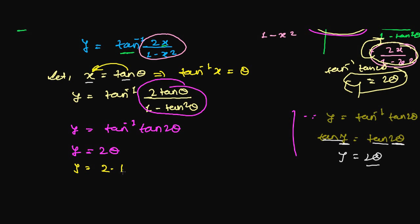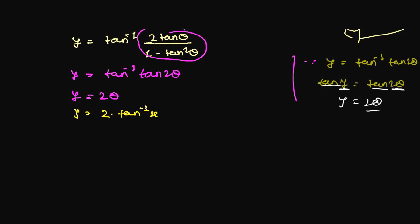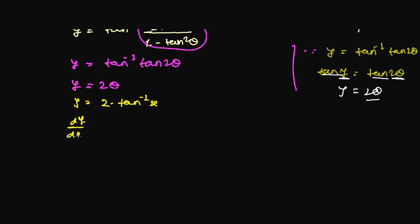Now let's differentiate both side with respect to x. So we'll be getting dy over dx equal with 2 times the derivative of tan inverse of x with respect to x.